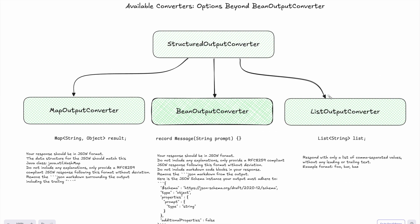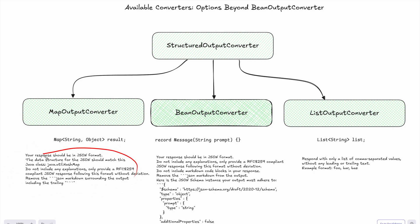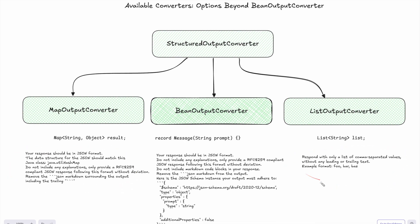The last part — we checked how BeanOutputConverter works in this coding session. Spring AI also provides two other additional converters: MapOutputConverter and ListOutputConverter. These are the example formats Spring will use to properly generate LLM instructions. That was it for today's video. I hope now you have a much better understanding of what's hidden behind the structured outputs architectural idea. This was Evgeny — thank you for sticking with me till the end. See you next time, bye-bye.